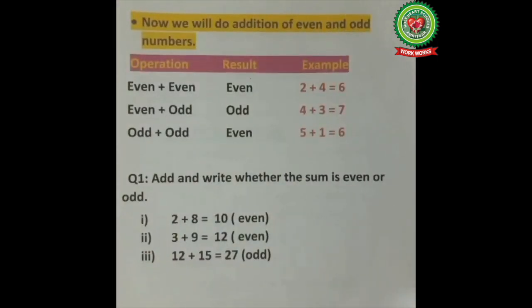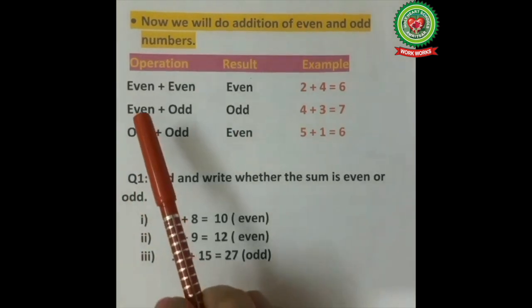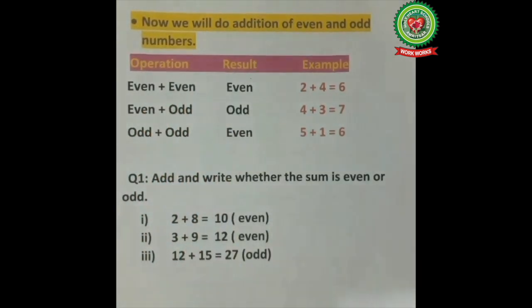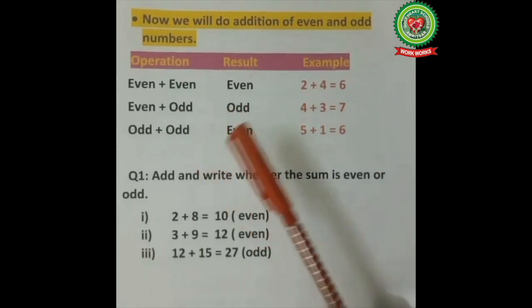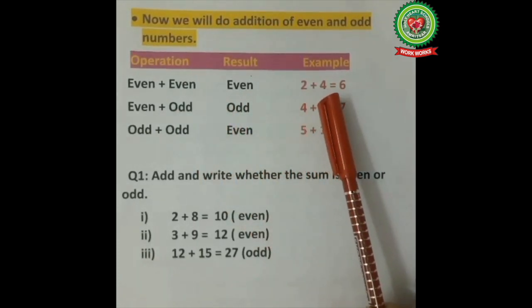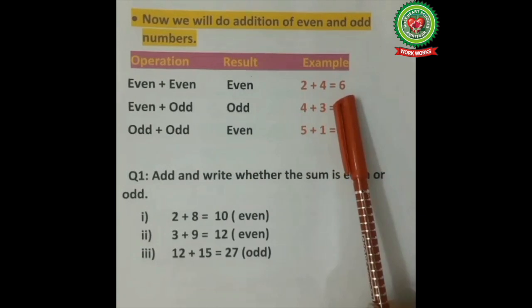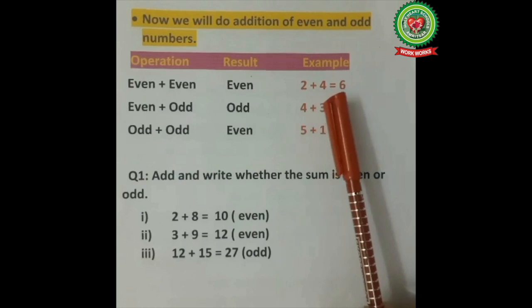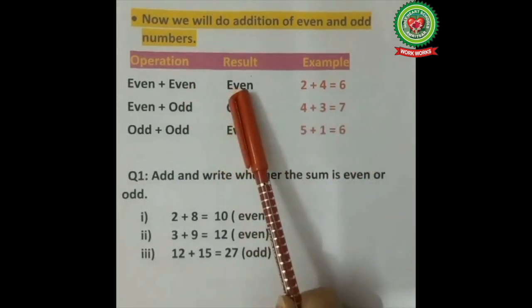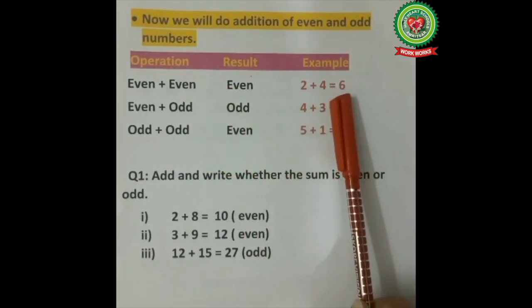Now students, we will do addition of even and odd numbers. First: even plus even — when both numbers are even, the answer is always an even number. For example, 2 plus 4 equals 6. Both 2 and 4 are even numbers, and 6 is also an even number.